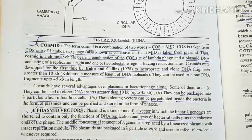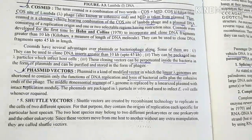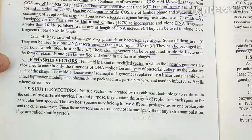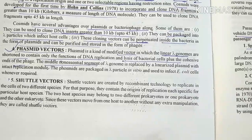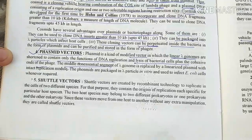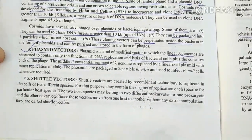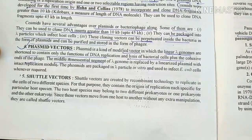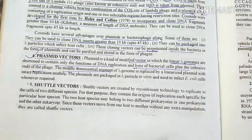The cosmid combines the cos site of lambda phage and plasmid DNA. Then there is the phasmid — this is a modified vector in which the lambda genome is shortened to contain only the functions of DNA replication. The shuttle vector is created by a combination of replication sequences to replicate in cells of different species, such as prokaryotic and eukaryotic hosts. Since these vectors move from one host to another without extra manipulation, they are called shuttle vectors.